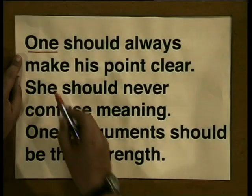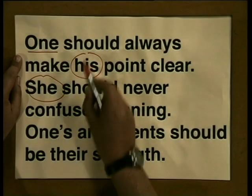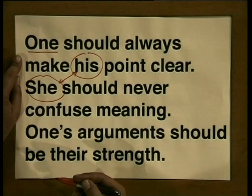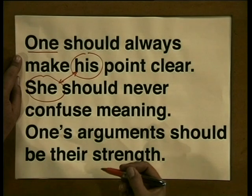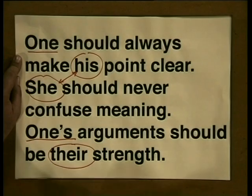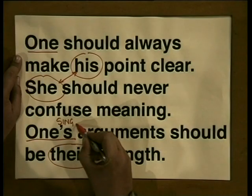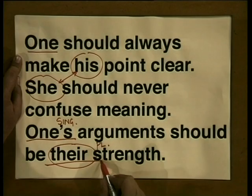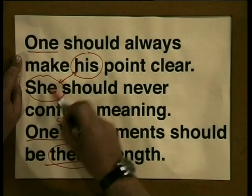Now, the passage opens with the pronoun one, and that means one should be used consistently throughout the passage. Then in the passage, there is a confusion about she and his. These pronouns — one male, one female — are used to refer to a single person. In addition, if you look at their used with one, we're confusing singular and plural. Since it's a single person, their is not acceptable for one, she, or he.